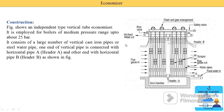These vertical tubes are made from cast iron or steel. One end of each vertical pipe is connected with horizontal pipe A, also known as header A. The other end is connected with horizontal pipe B, also known as header B, as shown in the figure. Other components include a feed water inlet valve, a feed water outlet valve, a stop valve, and a safety valve.